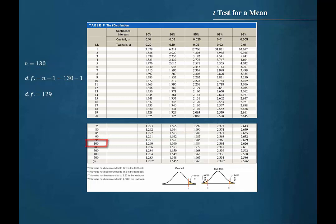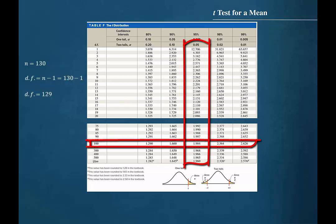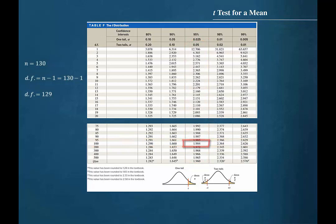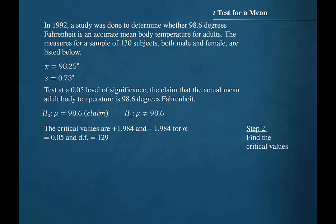This row and the two-tail 0.05 column meet at the critical t-value 1.984. So the critical values will be positive 1.984 and negative 1.984 when alpha equals 0.05 and we have 129 degrees of freedom.